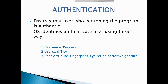Let us start with authentication. Authentication is the platform for identifying each user of the system and associating the executing program with that user. Authentication ensures that the user who is running the program is authenticated. Once identified, a user is authenticated using three ways: first, username and password; second, user card or key; third, user attributes such as fingerprint or signature pattern.